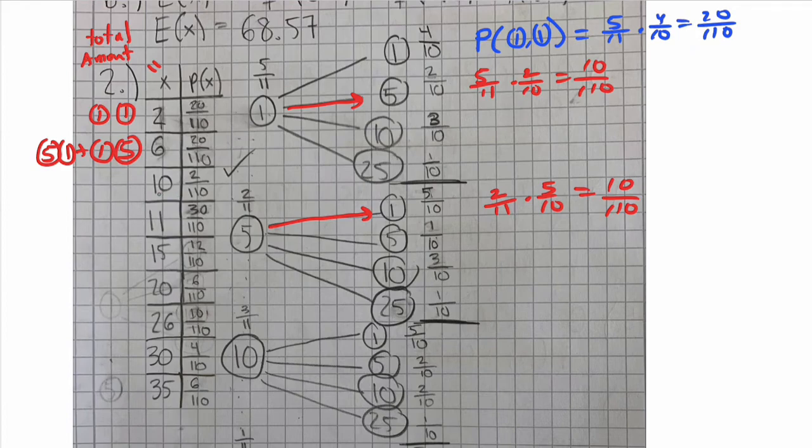Next we look at the ten-cent coins. That can only happen if you pull out a five-cent coin and a five-cent coin, and that happens over here and only here. So that's two-elevenths times one-tenth, which is two out of 110. So that's why we have a two out of 110 there.